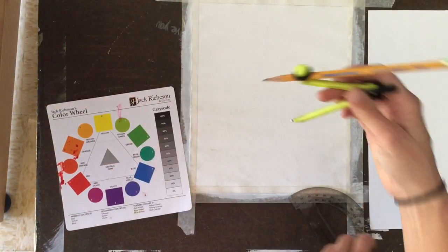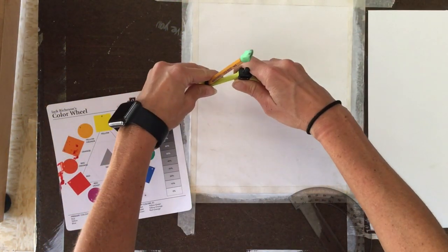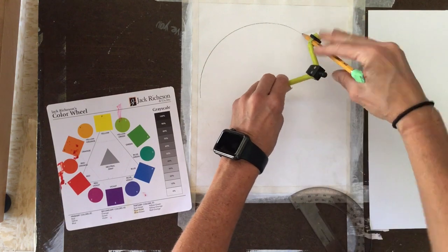To start our acrylic color wheel, we are going to start by creating a circle as large as we can on the paper.